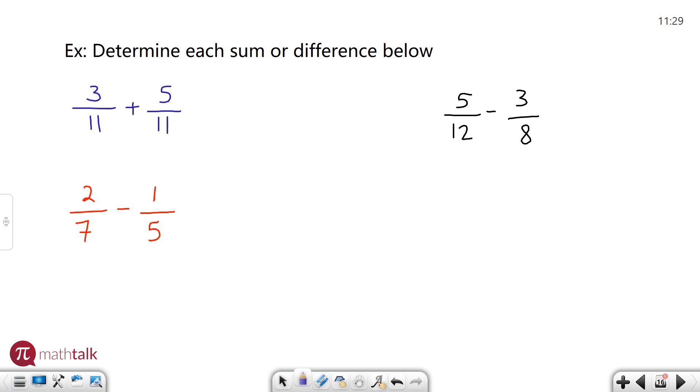We have the first example which says three elevenths plus five elevenths. With adding and subtracting fractions you need to have common denominators which means they have to be the same. If they're the same you can just add the numerators and keep the denominator the same. Three plus five is eight which means the sum of these is eight over eleven. Super easy.